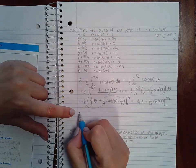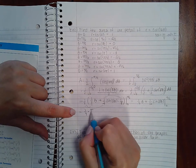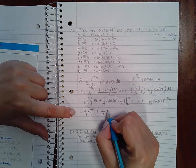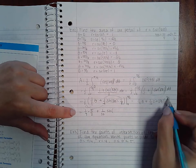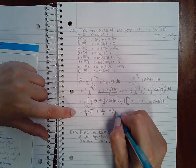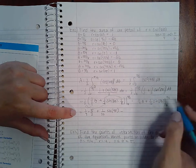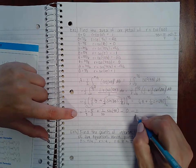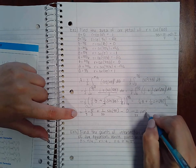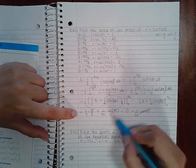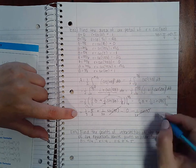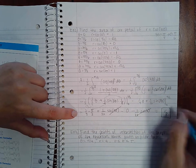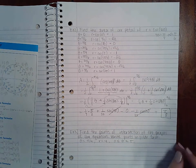So then I get 1 fourth times pi over 2 plus 1 over 32 sine of 4 pi minus 1 over 32 sine of 0. Sine of 0 and sine of 4 pi is 0, so you end up with pi over 8 as your answer. That's the area of one petal.